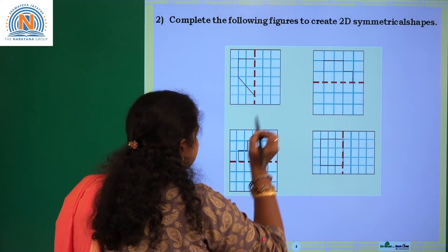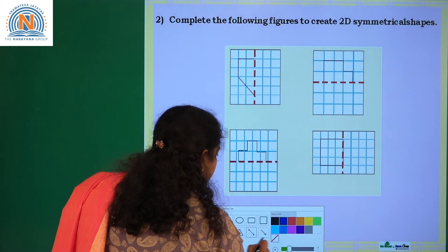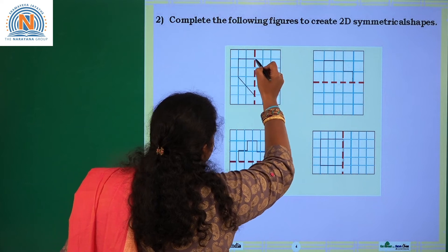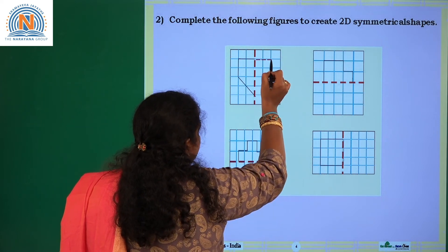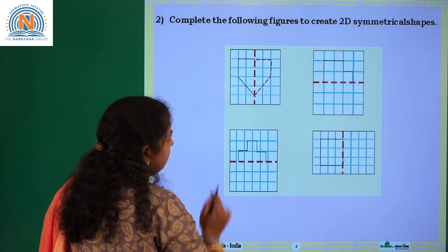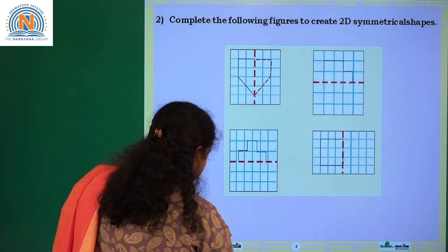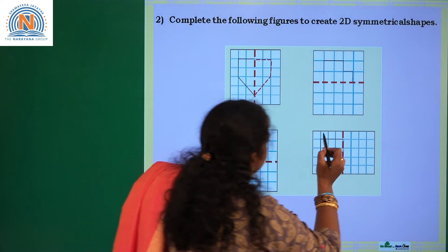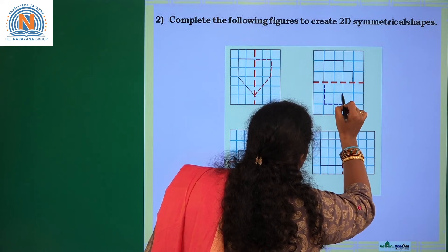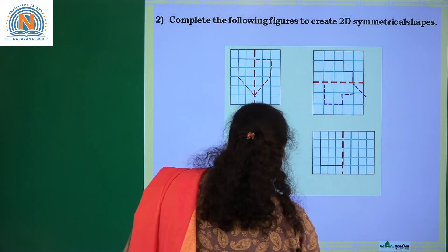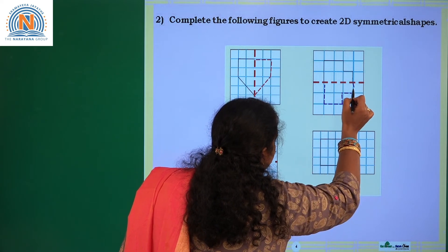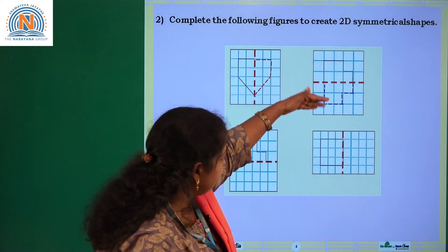Complete the figures to create 2D symmetrical shapes. A two-dimensional symmetrical shape should be completed. Observe the given half, take a line, and draw the mirror image in your notebook. This is exactly the other half of the given symmetrical figure.